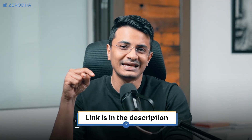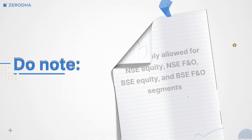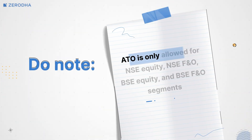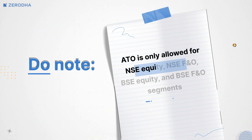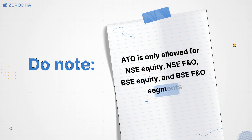To learn more about market price protection, check out the link in the description. Do note that the ATO feature is only allowed for NSE Equity, NSE FNO, BSE Equity, and BSE FNO segments.